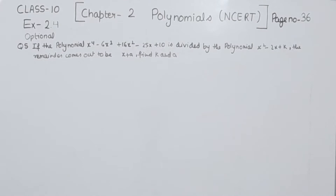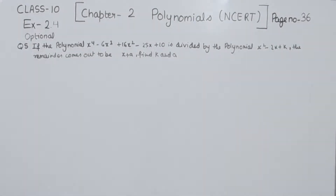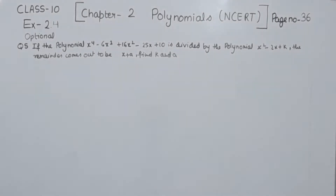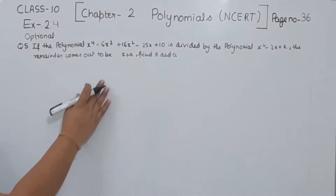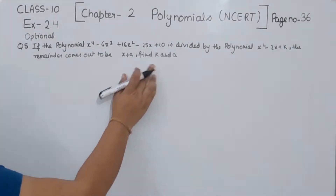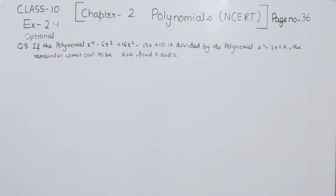If the polynomial x to the power 4 minus 6x to the power 3 plus 16x squared minus 25x plus 10 is divided by the polynomial x squared minus 2x plus k, the remainder comes out to be x plus a. Find the value of k and a.